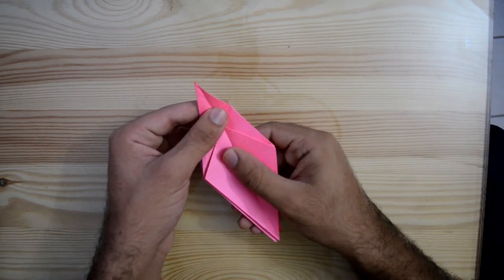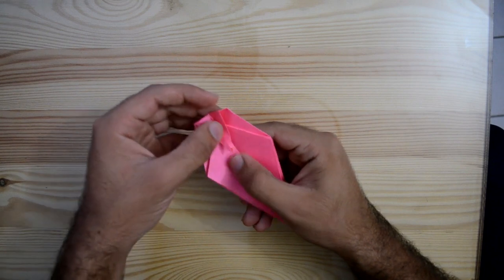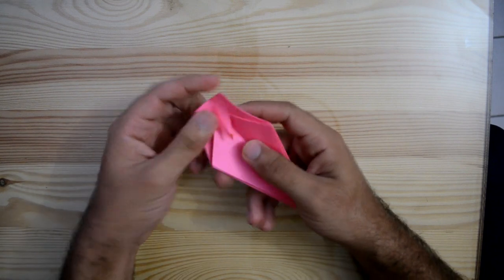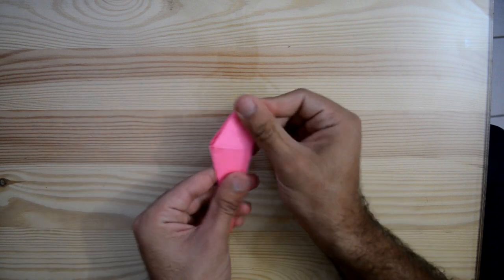Now I'm going to unfold the paper, fold down the head of the bird, then fold it back again.